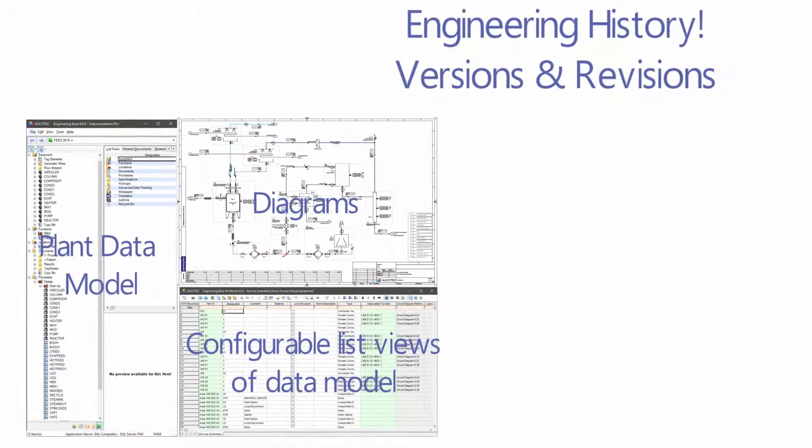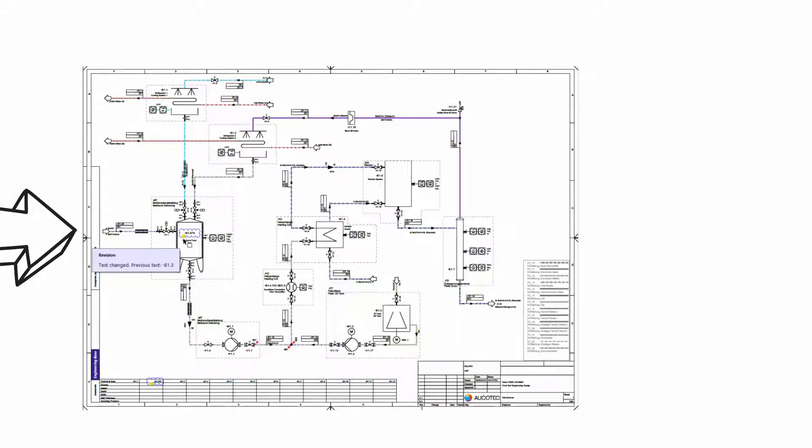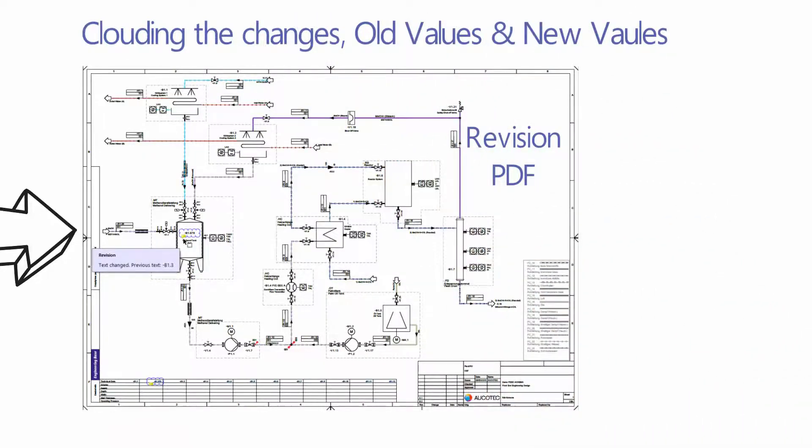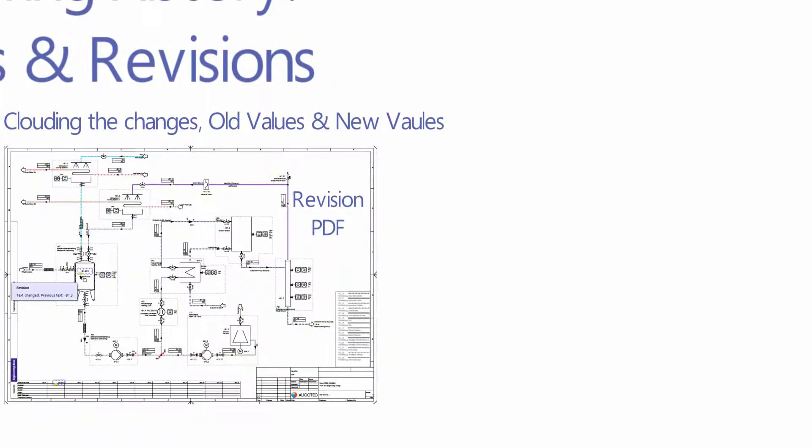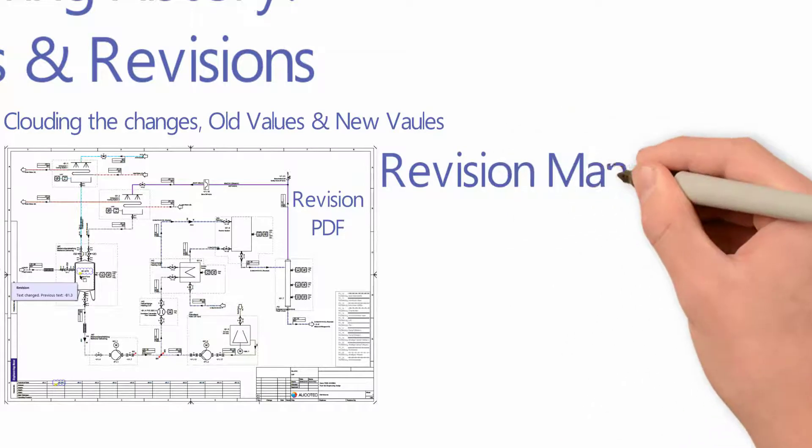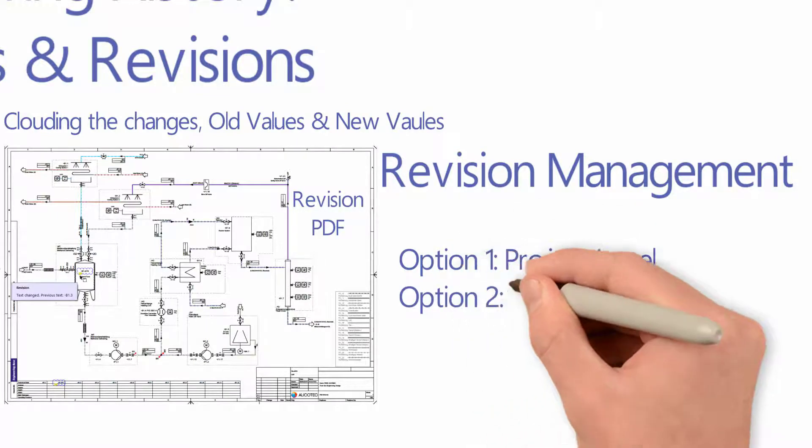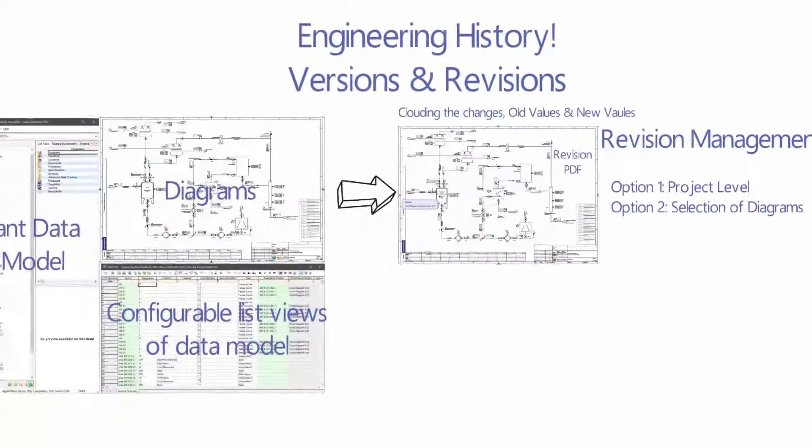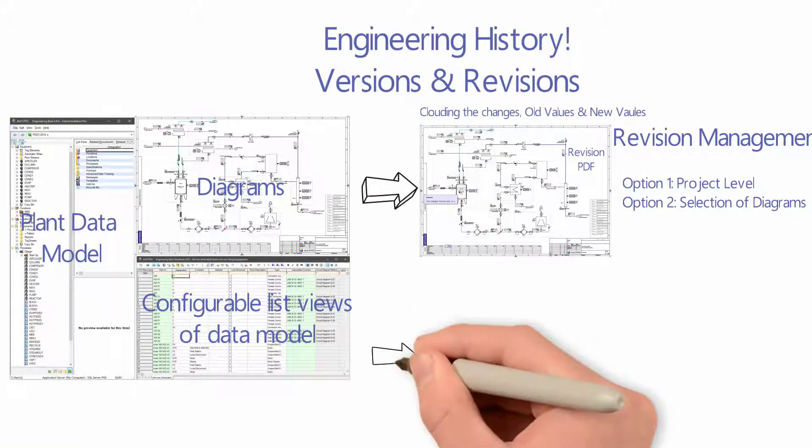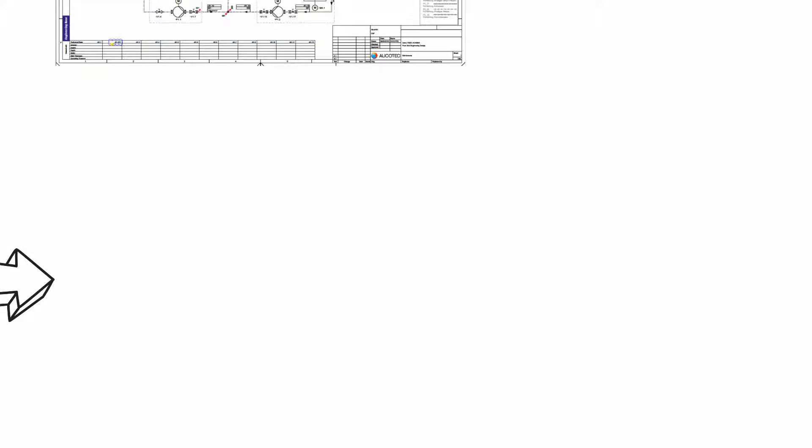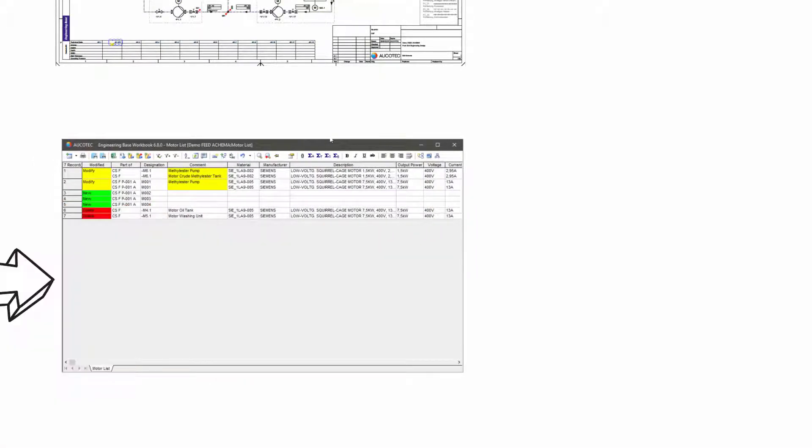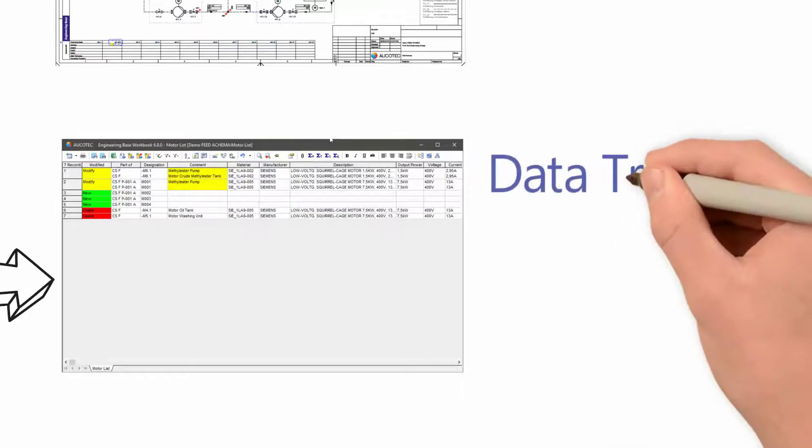Diagrams are deliverables of the project and by each new revision of diagrams all changes will be clouded with their old value as a tooltip. This is done by revision management either on the complete project or on a batch of selected diagrams. On the configurable list views, each user can track the changes within his or her own scope and independent of the documents revisions.